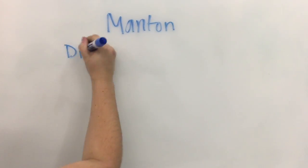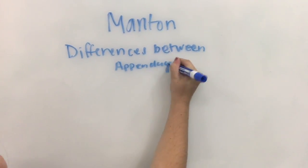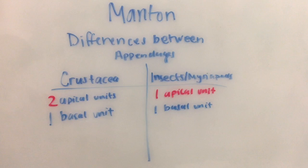In 1977, Manton published his finding of a fundamental difference between the appendages. Crustacean appendages are two apical units attached to a single basal unit, whereas insects and myriapod appendages are single apical segments attached to a single basal segment.